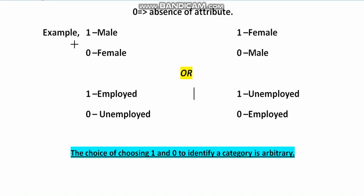Suppose we have gender or sex: 1 will indicate male and 0 will indicate female, or the other way around. Another example: 1 indicates employed then 0 will mean unemployed. If we take 1 as unemployed, then 0 will mean employed.